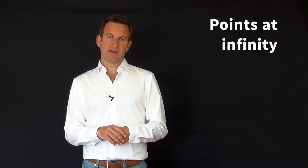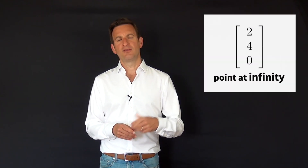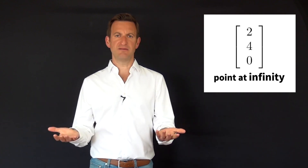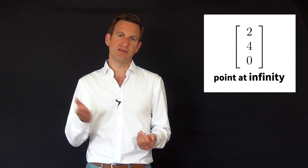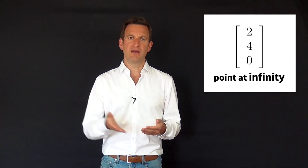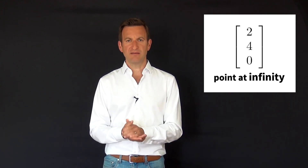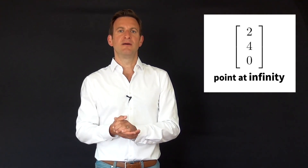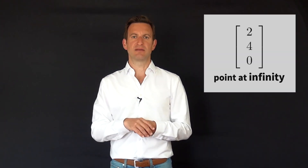The second key property is the ability to represent points which are infinitely far away. By setting the last coordinate to 0, we can express such points with finite coordinates. You can see this when dividing by the last component to return to the Euclidean world — dividing by 0 means the points are infinitely far away. Importantly, in homogeneous coordinates we still maintain the direction to that point, even if it is infinitely far away.